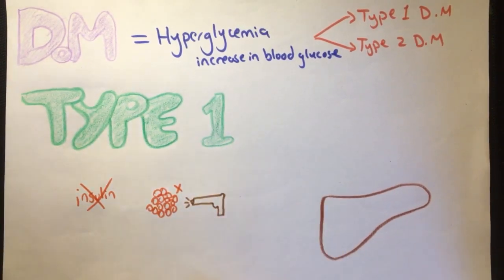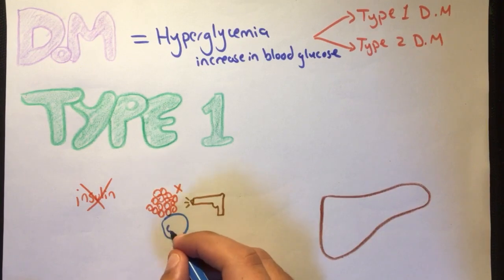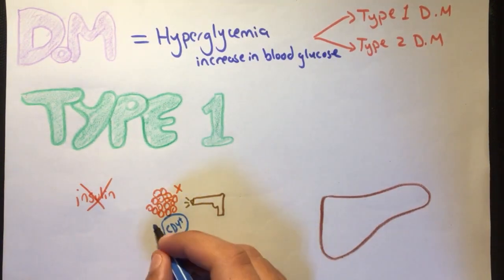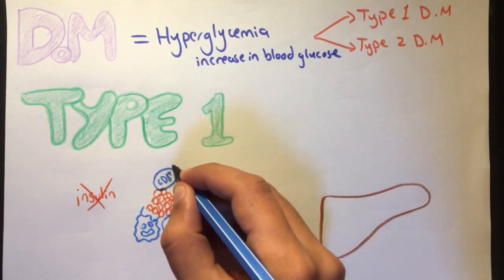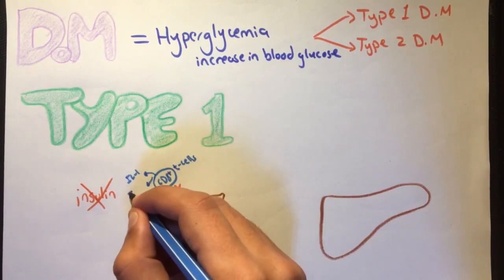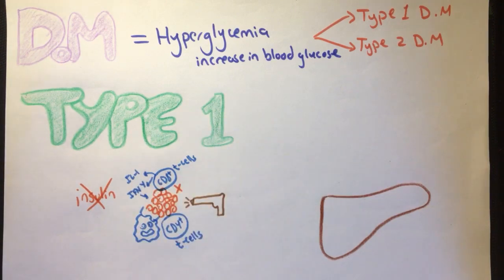This autoimmunity occurs via the following mechanisms. First of all, CD4+, which are normal T cells found in the body, will cause beta cell damage by activating macrophages, which can cause tissue injury by engulfing the cells. In addition, CD8-positive cells, also normal T cells, will directly kill beta cells by secreting their weapons called cytokines, like interleukin-1 and interferon-gamma.